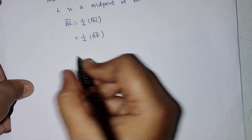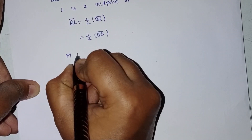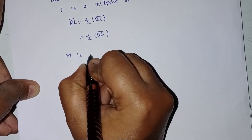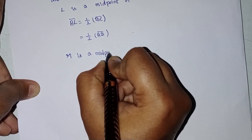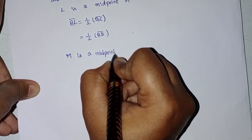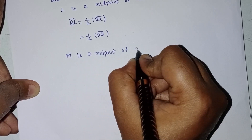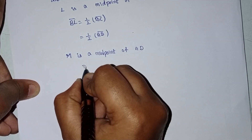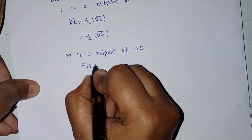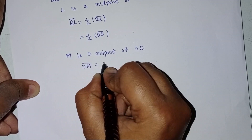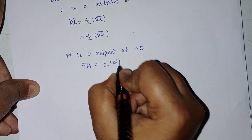Now for M: M is the midpoint of CD. So similarly, DM is half of DC. Since DC equals AB, DM equals half into AB.